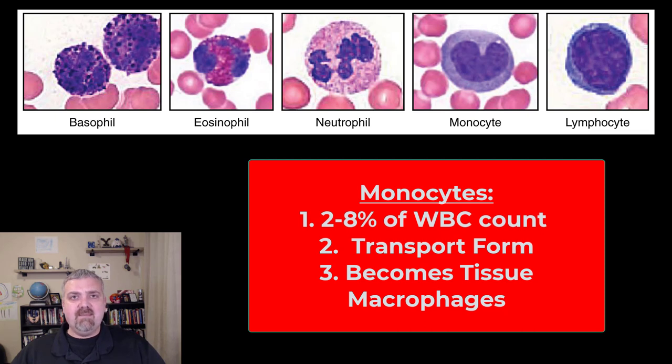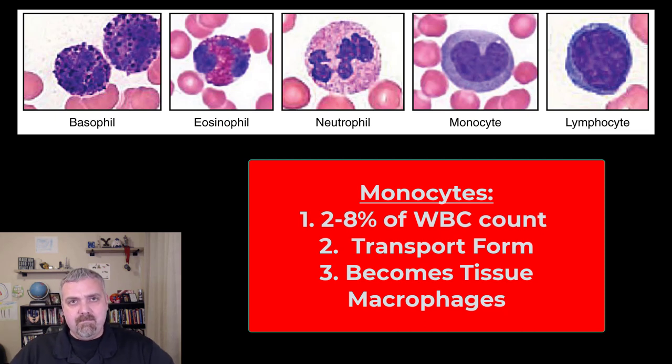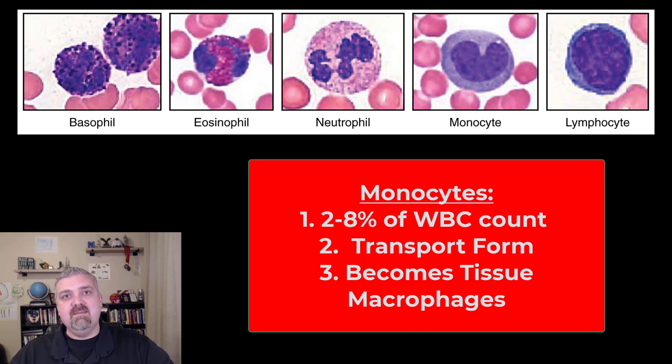So those are the five different types of leukocytes or white blood cells and their main functions. I hope this helps. Have a wonderful day. Be blessed.